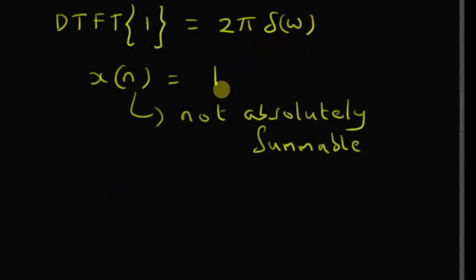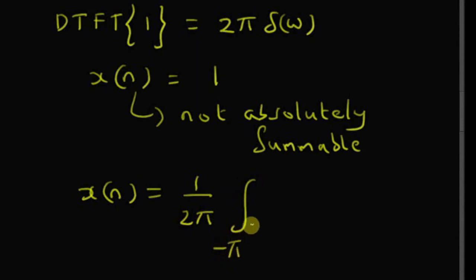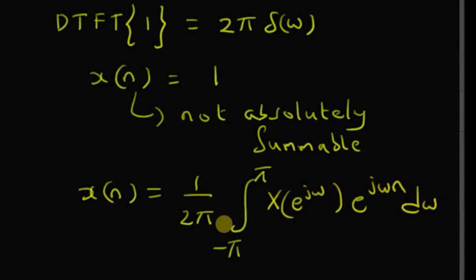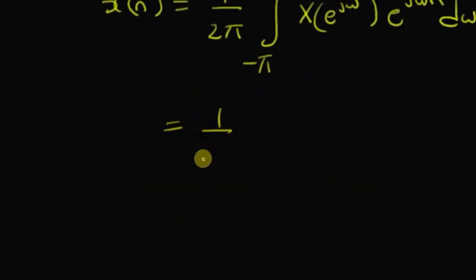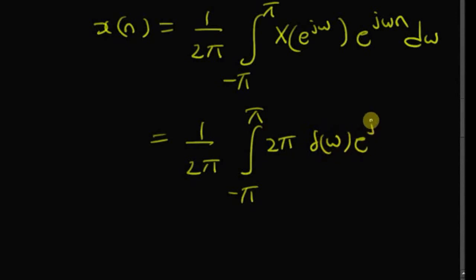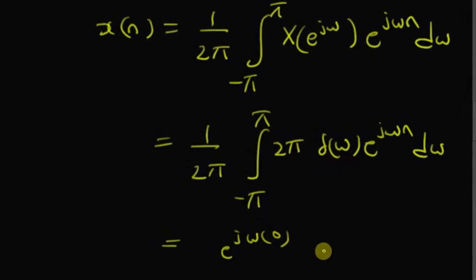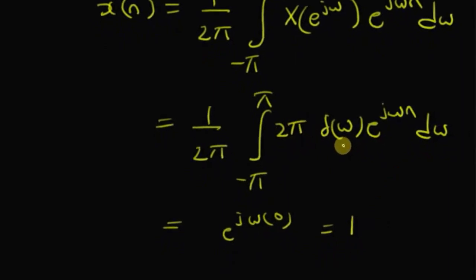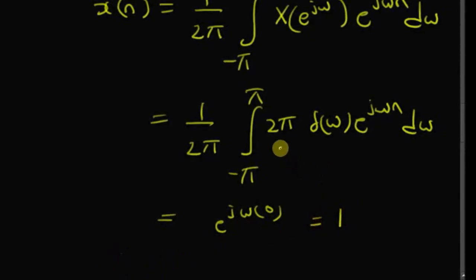We can verify the DTFT by using the inverse formula: x(n) = (1/2π) ∫ from −π to +π of X(e^jω) · e^(jωn) dω. Using X(e^jω) = 2π·δ(ω), this becomes (1/2π) ∫ from −π to +π of 2π·δ(ω) · e^(jωn) dω, which equals e^(jω·0) = 1, since δ(ω) = 1 at ω = 0 and zero elsewhere. Hence, the inverse DTFT of 2π·δ(ω) is one, so the DTFT of one is 2π·δ(ω).